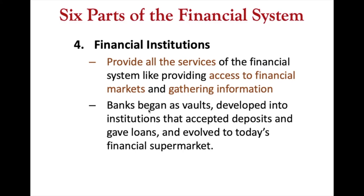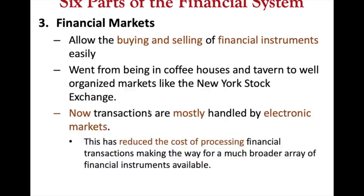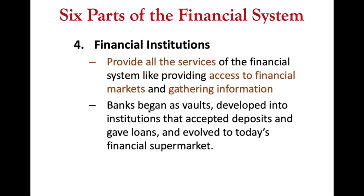Number four are financial institutions — don't mix them up with number three, financial markets, which are the stock exchange places. Financial institutions are things like banks and insurance companies; they provide all the services of the financial system. For example, if you need a mortgage, you go to your bank, and they provide you with capital and the access you need.